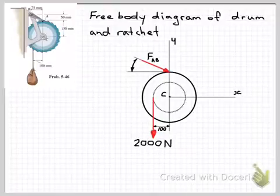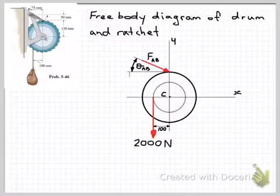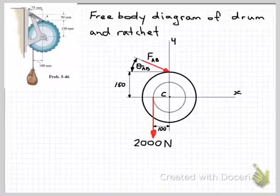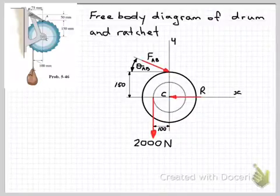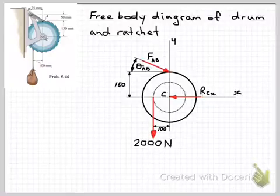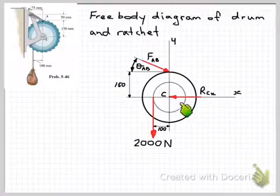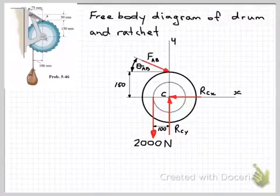So if we indicate the angle of that force there as theta AB then we can also indicate there the location of that force. That's at the outer diameter or the outer radius of the ratchet of 150 millimetres. And we can put in our reaction forces at the centre pin C. So we will have a force component in the x direction and also a force component in the y direction. So we'll call that RCX and RCY.